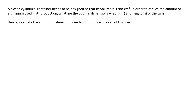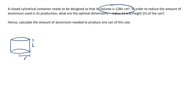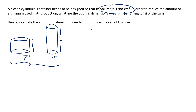If we think about this question, one of the constraints is that the can has to have a volume of 128π cm³. There can be different dimensions — for example, we can have a shorter can with a larger radius r and a smaller height. Alternatively, we can design a taller can with a smaller radius but with a bigger height. Either way, we want to make sure that regardless of the values of r or h, the volume is always maintained at 128π cm³.